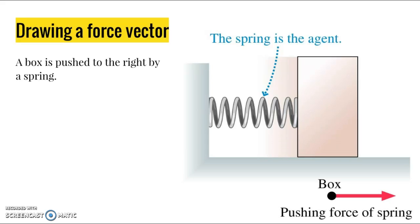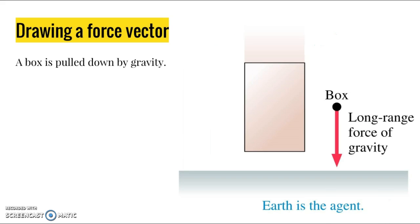In this example, we have a box being pushed to the right by a spring. Our object is the box, and the spring is our agent, and it's providing a pushing force that's to the right. Here, even though the agent is on the left, it's providing a force that acts towards the right. So if we draw the situation, we have a force vector that's pointing to the right.